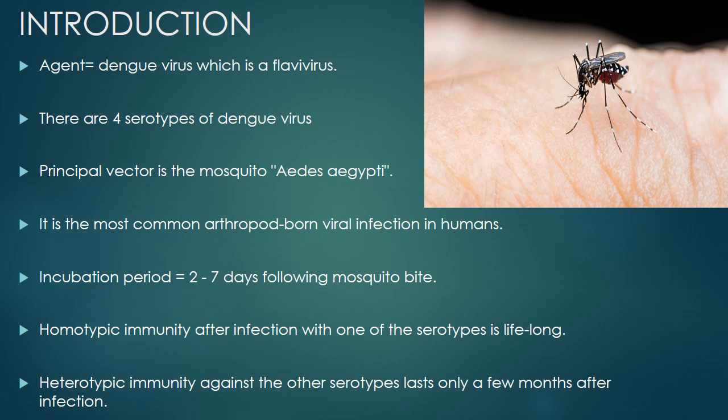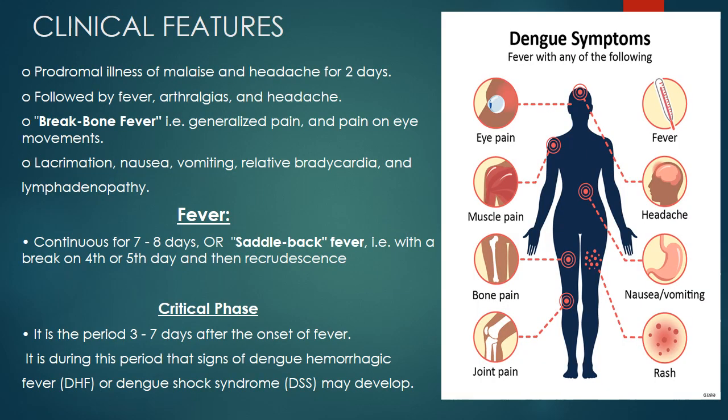The clinical features include a prodromal illness starting with malaise and headaches for two days, followed by high-grade fever of 40 degrees Celsius or 104 degrees Fahrenheit. It is also called bone-breaking fever because it is associated with generalized body aches, pain on eye movement, arthralgia, joint pain, headache, lacrimation, nausea, and vomiting.